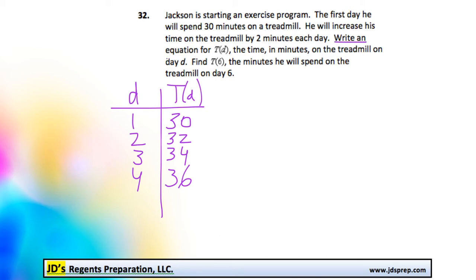So the first thing we do is write an equation for T of D, the time in minutes on the treadmill on day D. That just sounds confusing. Okay, so since this is a linear relationship, I know it's going to be in the form of y equals mx plus b.